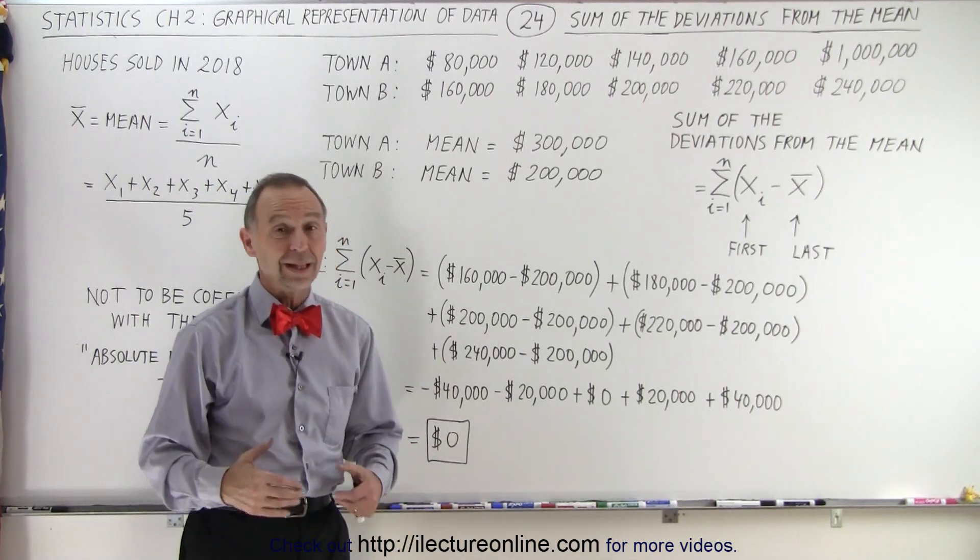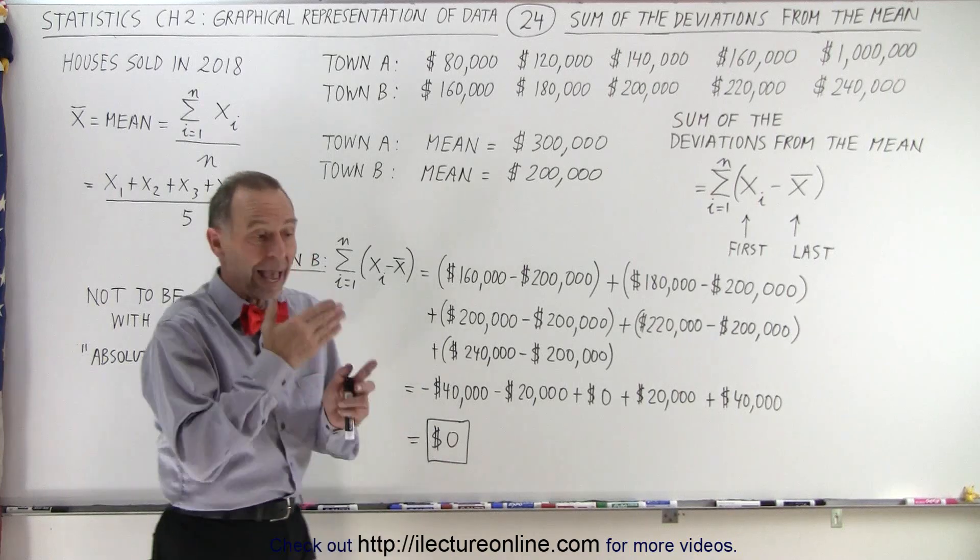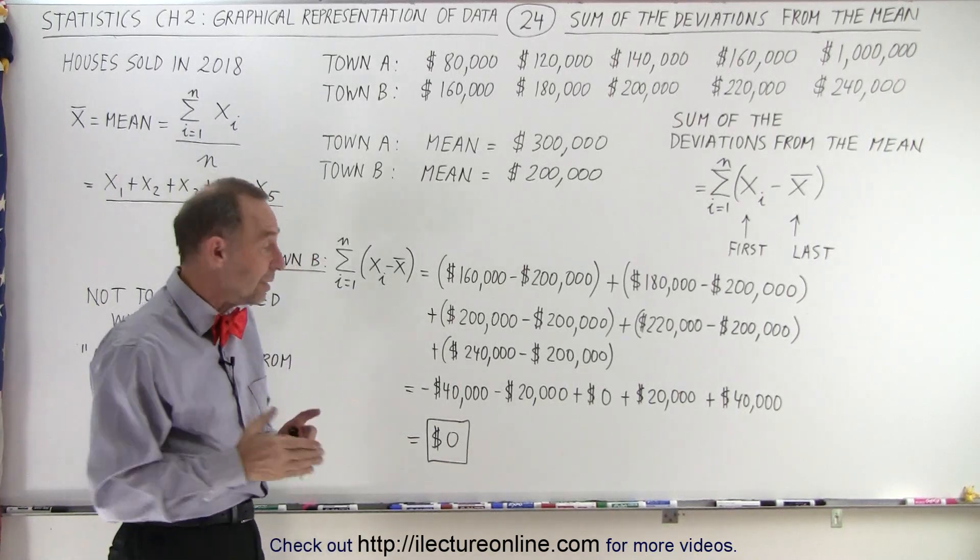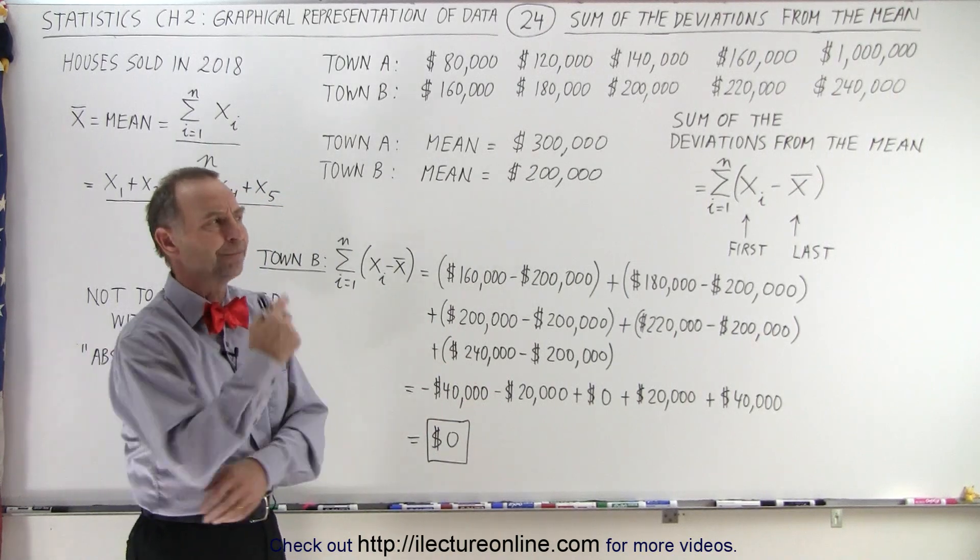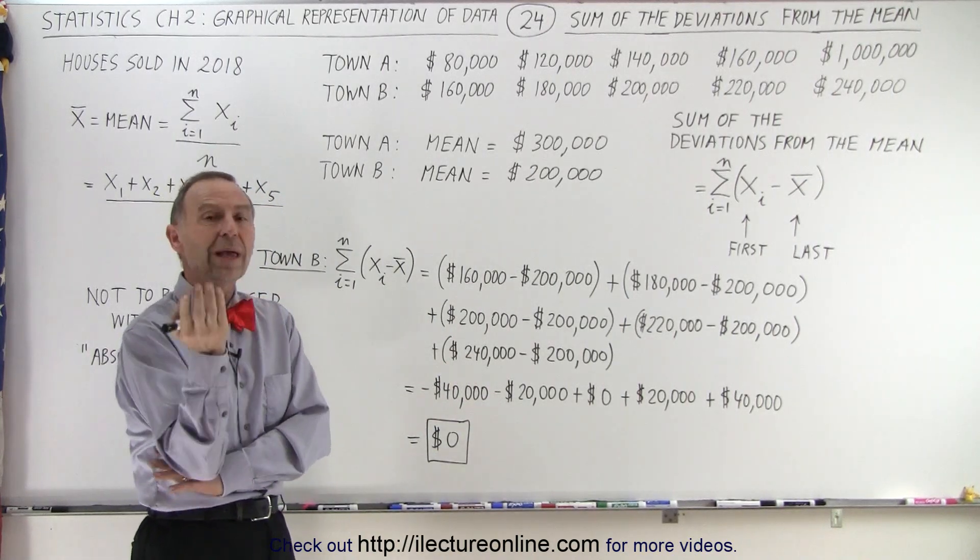At first that seems odd but then that's what we should get. If we add up all the deviations from the mean we will indeed get zero and that will always be the case for every data set. So why do we have that?